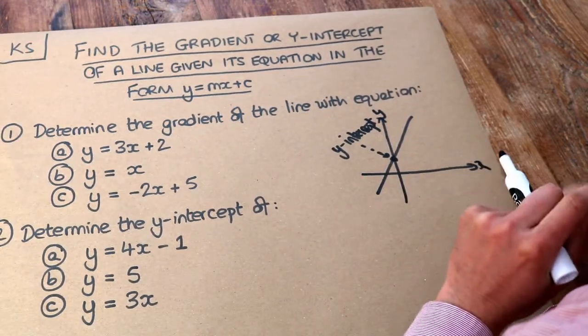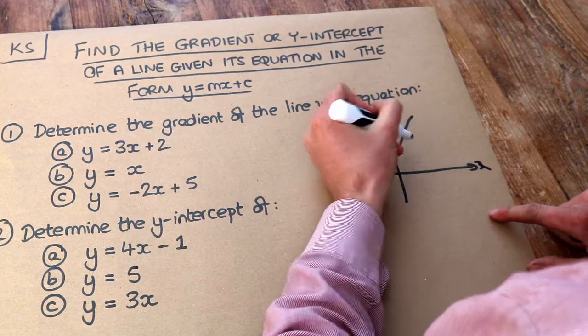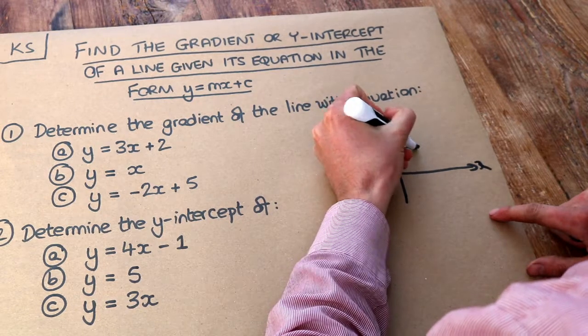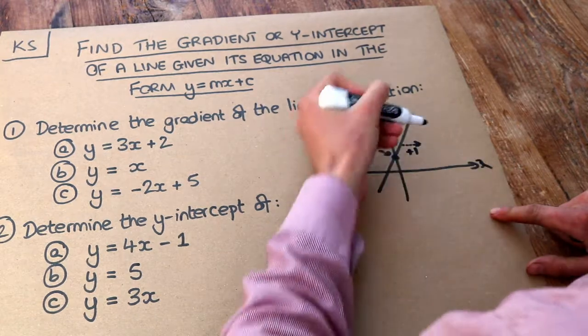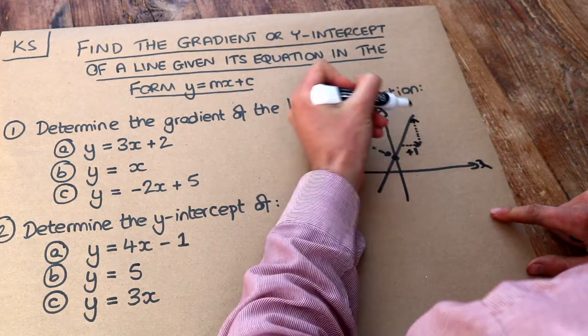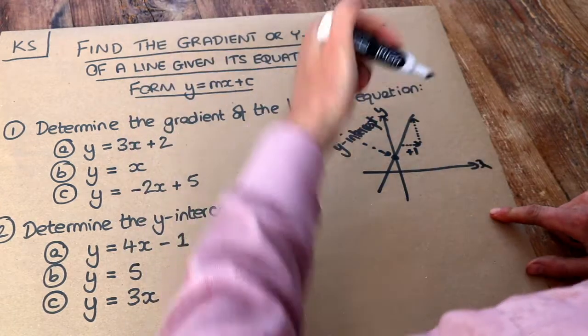And the gradient is how steep the line is. And more specifically, it means each time the x-value goes up by 1, the gradient tells us how far up the line goes or how far down the line goes if it's going downhill.